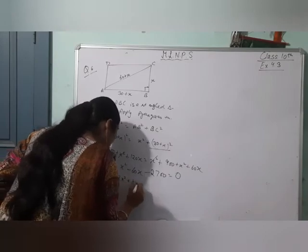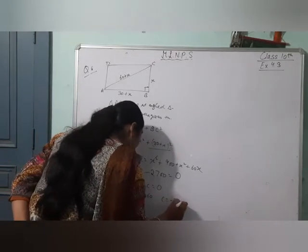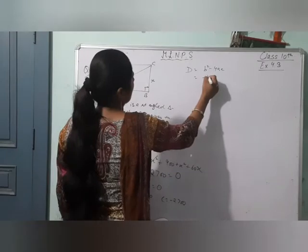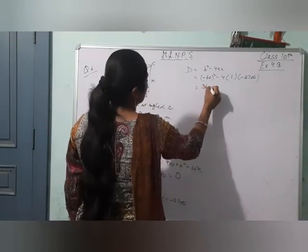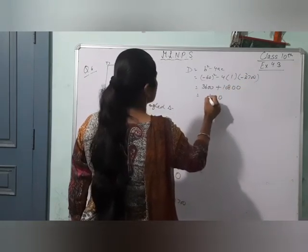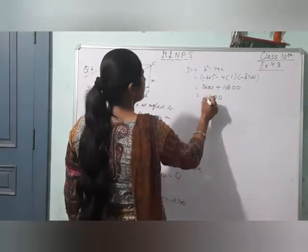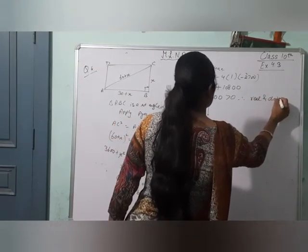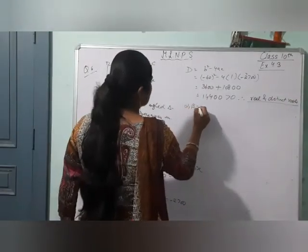For quadratic formula, compare with Ax square plus Bx plus C. A equals 1, B equals minus 60, C equals minus 2700. Calculate D: B square minus 4AC equals minus 60 square minus 4 into 1 into minus 2700 equals 3600 plus 10800. D is greater than 0, therefore real and distinct roots.